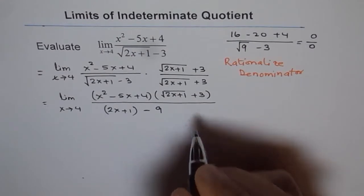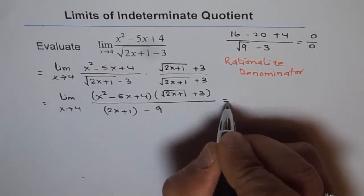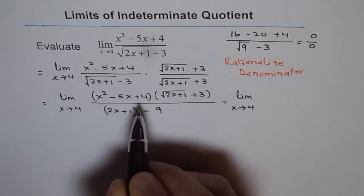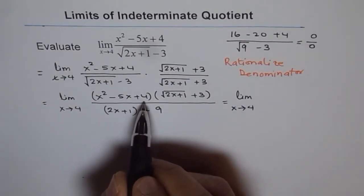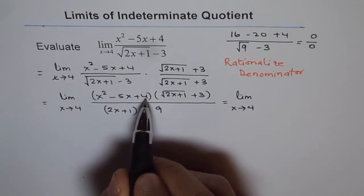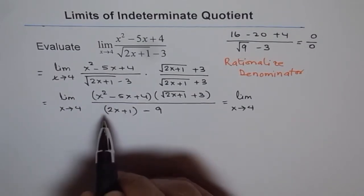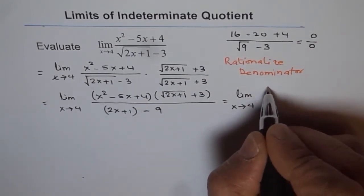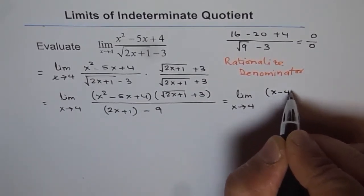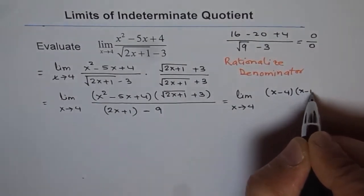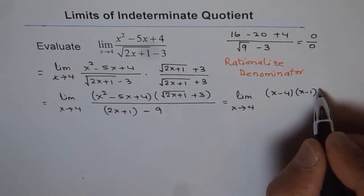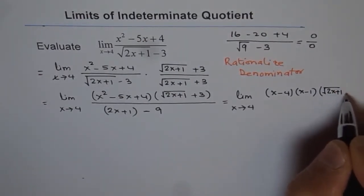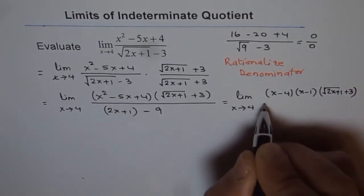Let's factor and see what we get. We get the limit as x approaches 4. We are looking for two numbers whose product is 4 and sum is minus 5 — those are minus 4 and minus 1. So we can write the numerator as x minus 4 times x minus 1, multiplied by square root of 2x plus 1 plus 3, divided by the denominator.